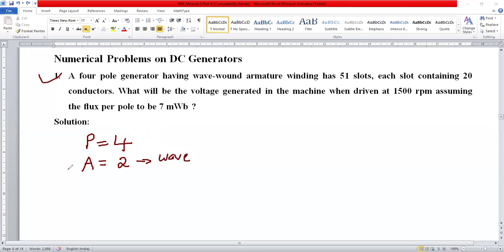The armature winding has 51 slots, each slot containing 20 conductors. Therefore, the total number of conductors is given by 51 times 20, which equals 1020 conductors.